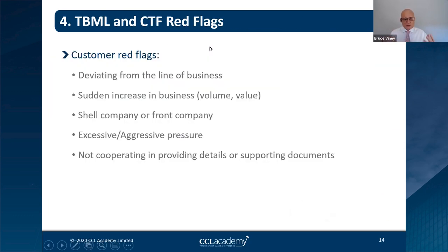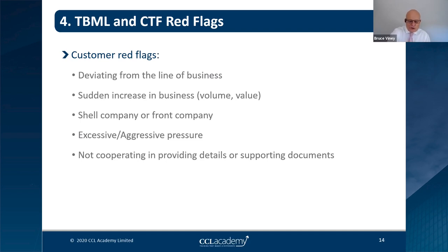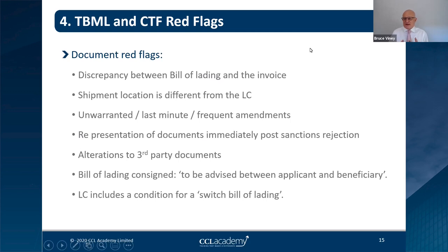There are many red flags around customers, transactions, shipping, and documents. Customer red flags for trade are similar to general AML red flags: deviating from normal behavior, big changes in volume or value, or failure to cooperate in providing documents. Document red flags include discrepancies between a bill of lading and an invoice, or a shipping location different from that named in the letter of credit. Changes happen, but you must always follow them through and find out why.